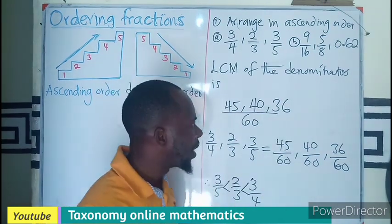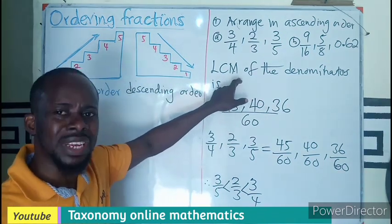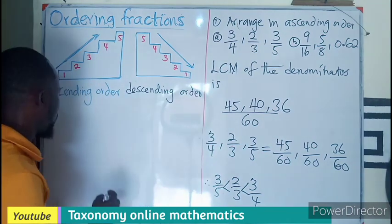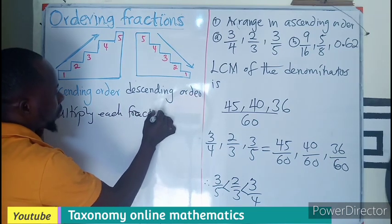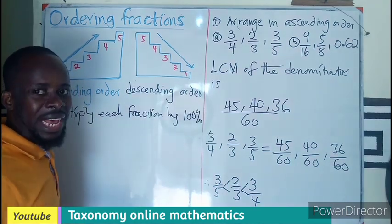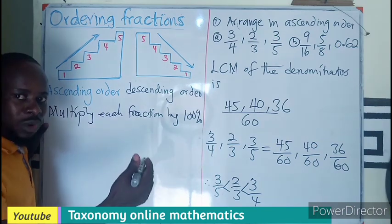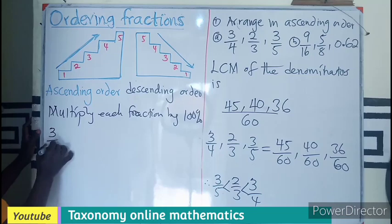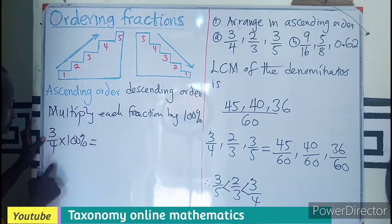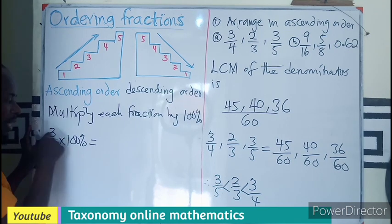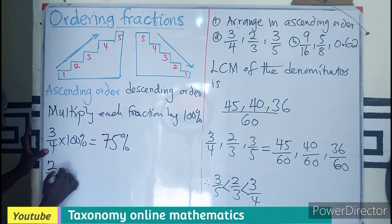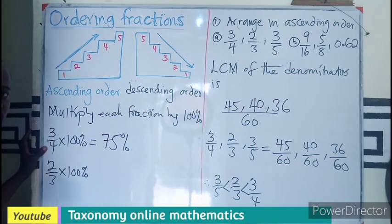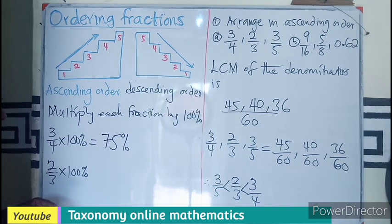The second aspect is using 100 percent, multiplying it on a fraction. So 3 over 4 times 100 percent: 4 will go here 25, 25 times 3 will be 75 percent. Then my 2 out of 3 is going to be multiplied by 100. Now this, if you divide this you cannot have a perfect division, so you multiply this you get 200.